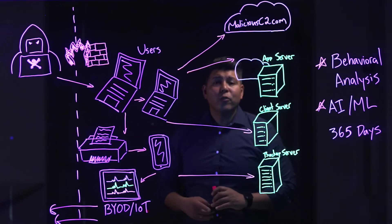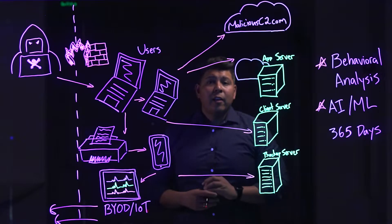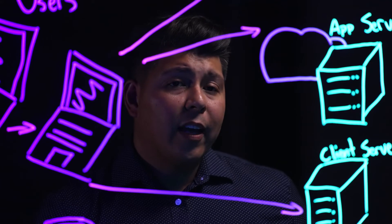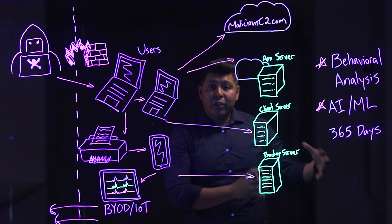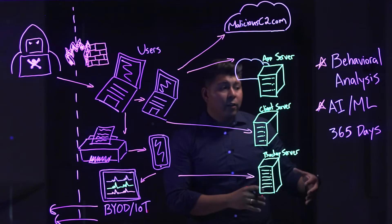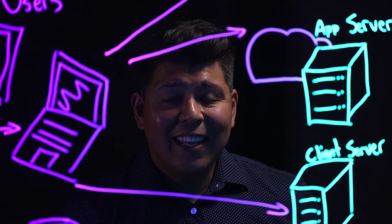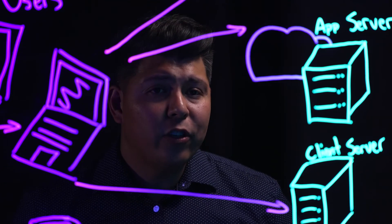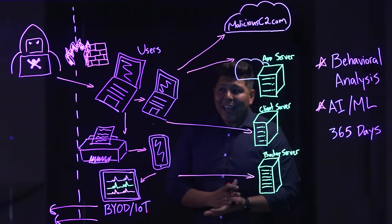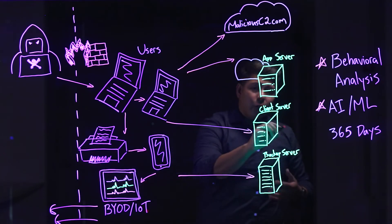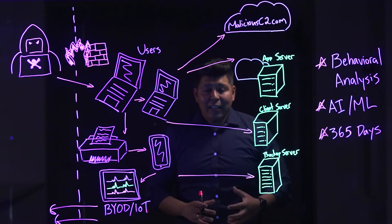You also need a tool that allows you to retain data. We're seeing that attackers are lingering on the network for longer and longer periods. During the SolarWinds attack, the attackers were lingering on the network for over a year before the security teams knew what was going on. You need a tool that gives you extended historical data retention, allowing your security teams to analyze historical data — 365 days of historical data retention is key.